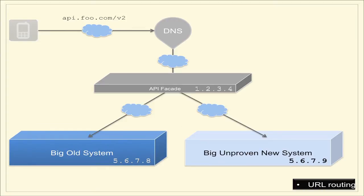Now we can think about versioning. Your request comes in with v2, goes through DNS, hits your API facade, and what we're adding to the system is URL routing — just like the subdomain routing, except it's doing URL parsing. You can imagine where maybe v1 of your facade points at a big established system, whereas v2 is pointing at some big unproven new system, and you want a simple way to shunt between those two IP addresses.